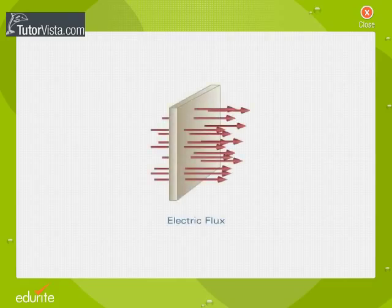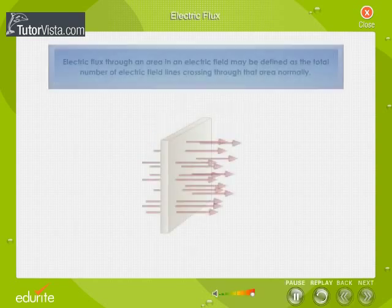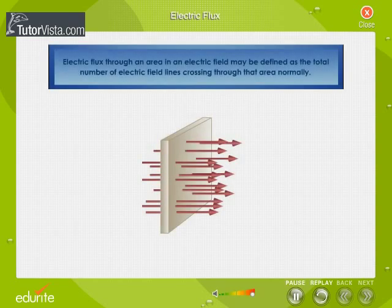Electric flux. Electric flux through an area in an electric field may be defined as the total number of electric field lines crossing through that area normally.